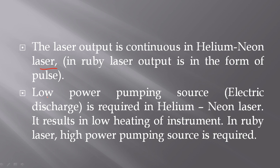Low power pumping source, that is electric discharge, is required in Helium Neon laser. It results in low heating of instrument. But in Ruby laser, high power pumping source is required.